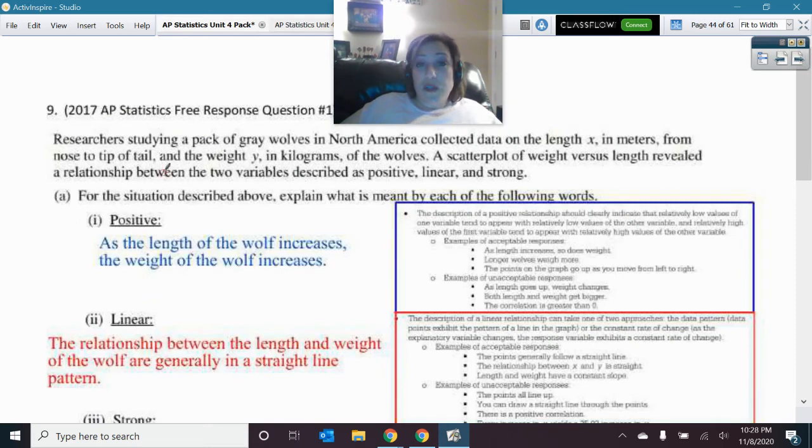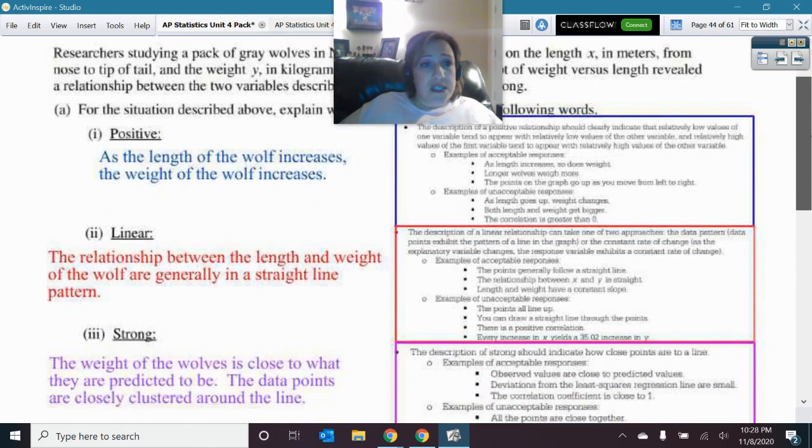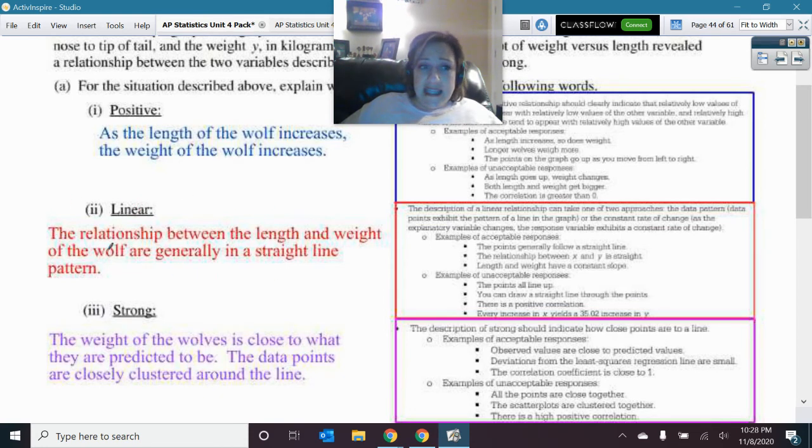All right. Moving on. Here was a free response question. Okay. And so, you could pull up the guidelines that I went ahead and printed out for you so you could read this a little better. But, in order to get credit for this positive, you had to talk about how, as the X is increasing, the Y is increasing. And you had to do it in context. That's what positive means. As the length of the wolf increases, the weight of the wolf increases. To say it was a linear, you had to say that they were generally in a straight line pattern. The points followed a straight line.